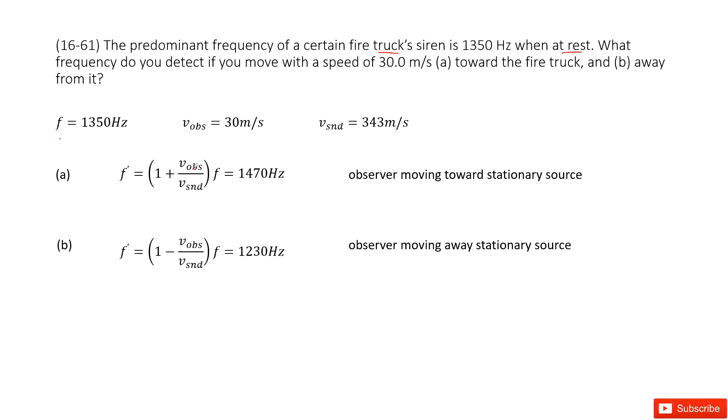Now we can see we have the first quantity, the velocities for the observer. This is given as 30 m/s. And also the velocity for the sound traveling in the air, 343 meters per second, right? Now you just input all the given quantities and get the answer.